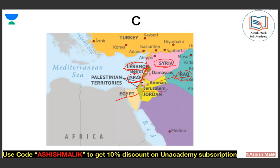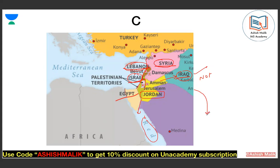Jordan can cause more confusion. Jordan does not touch the Mediterranean coast either. But Jordan is not landlocked — it has access to the Red Sea in that region. Similarly, Iraq is also not a landlocked country — it has a small opening to the Persian Gulf. So both Jordan and Iraq have sea access, just not to the Mediterranean.